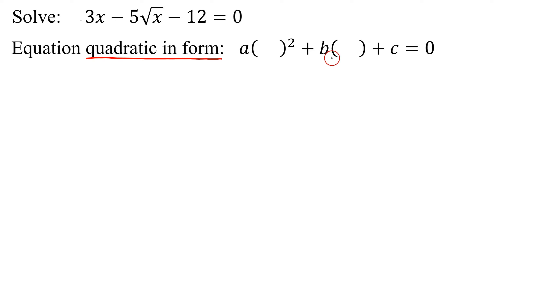In this case, what variable expression goes in these parentheses? Well, it looks like it's going to be the square root of x, but let's double check. If I take the square root of x and square it, they undo each other, I get x, which is the variable in my first term.